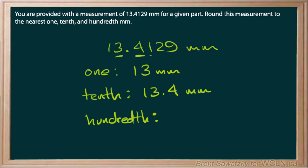And hundredth, that's that guy there, the one. And so we look at the digit after that. And again, we always want to look at the digit after, make sure that if it's five or greater, then we typically round up. If it's less than five, then we leave it the way it is. And in this case, we can put it as 13.41 millimeters.